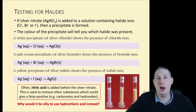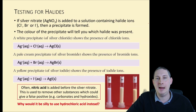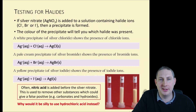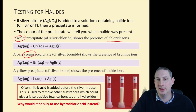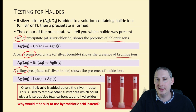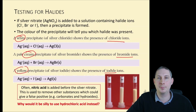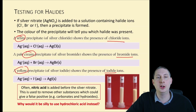If silver nitrate solution is added to a solution containing halide ions, a precipitate is formed, and the colour of the precipitate tells you which halide was present. A white precipitate indicates chloride ions; a pale cream precipitate indicates bromide ions; and a yellow precipitate indicates iodide. You need to know all of these colours and the ions they indicate.